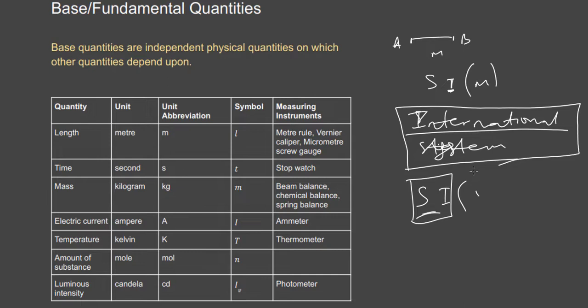The unit of time is the second, with symbol s (small letter s), and the symbol of time is small letter t. We use a stopwatch to measure it. Mass has the SI unit of kilogram, with symbol M. We use a beam balance, chemical balance, or spring balance to measure mass.